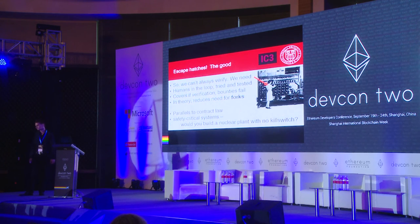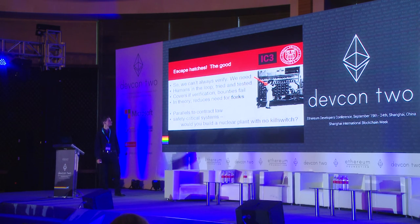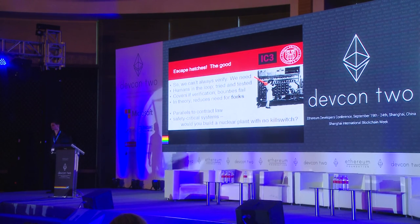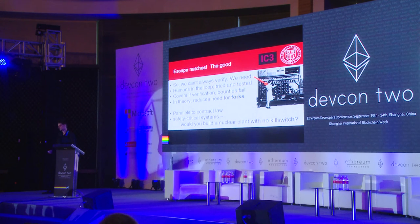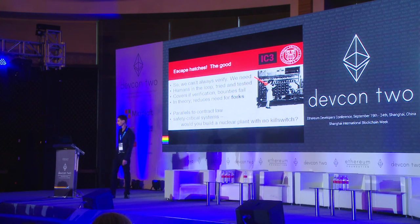Escape hatches come out of the need of not always being able to verify our contracts. What we need is something they figured out very early on in safety-critical systems: we need to put a human in the loop at some point. It's true that the promise of these systems involves taking humans out of the loop, and in many cases that can be achieved, but we shouldn't take that as an absolute. If verification or bounties fail, it's important to have some sort of fail-safe backup mechanism. I'll pose the question: would you write nuclear power plant software that has no kill switch? Probably not.